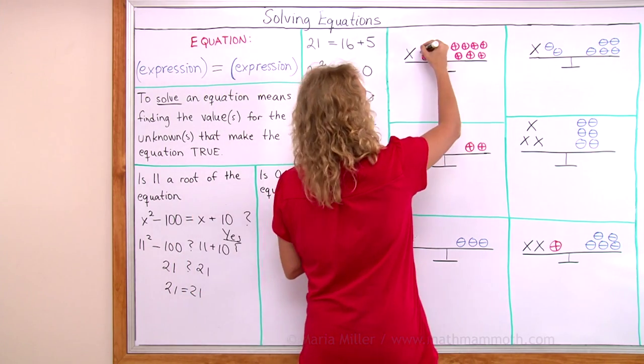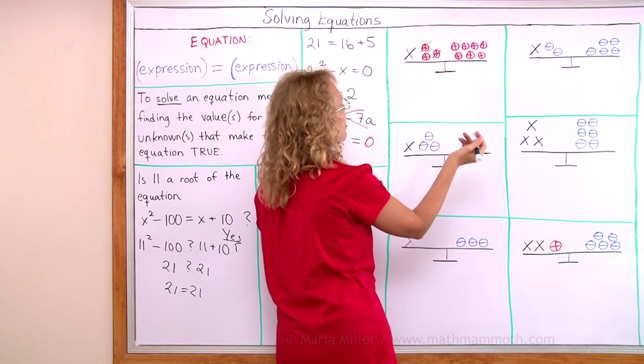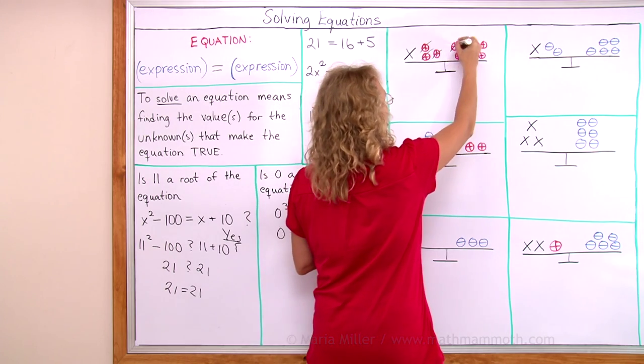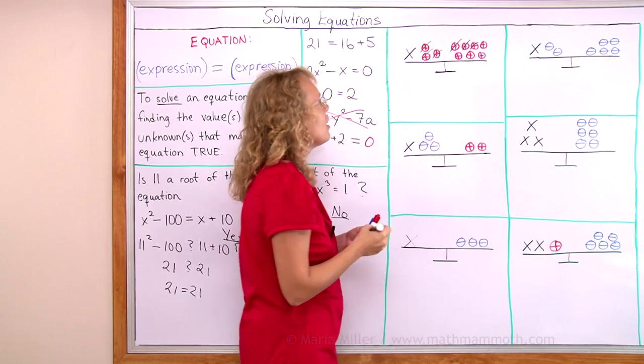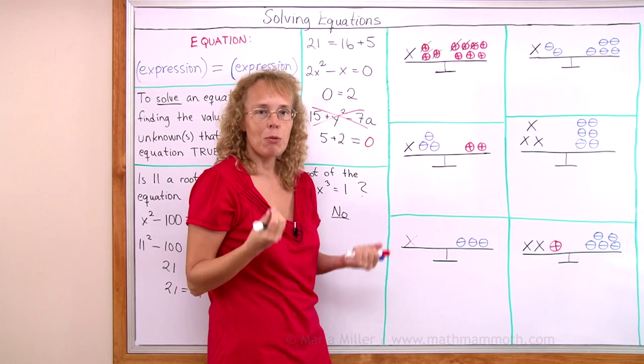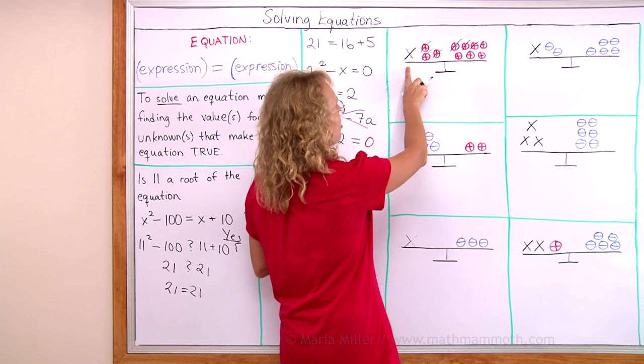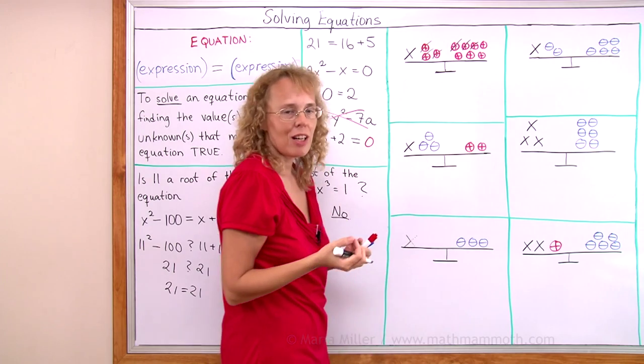For example, if I'm here, if I remove those three from this side, well then that would make this side of the seesaw lighter and this would go up. But if I remove those same things from this side also, then it will stay balanced. The weights will be equal. So then I can see that x alone must equal four positive counters.